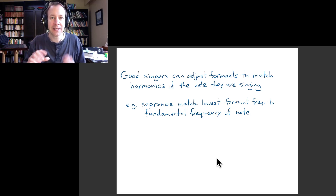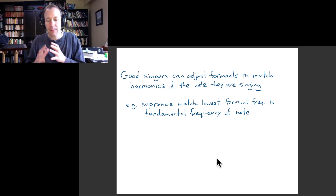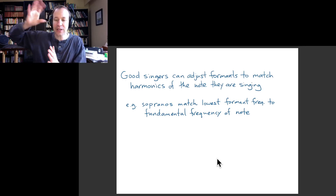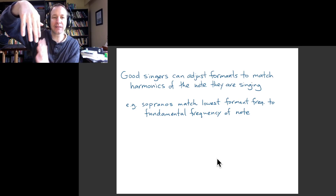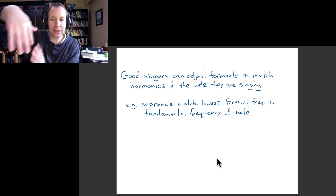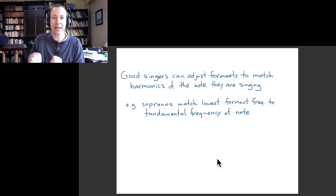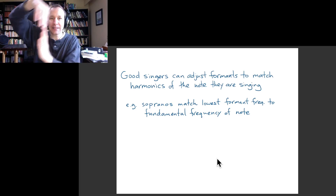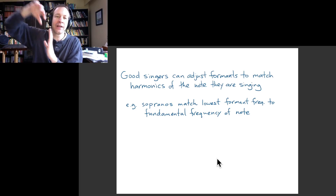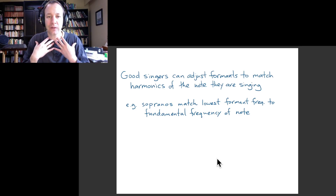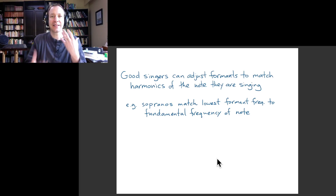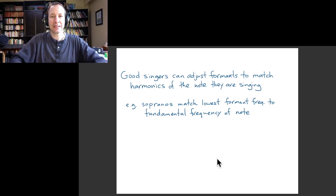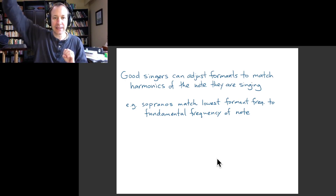This is particularly true for sopranos singing in their upper range, because there it's actually possible to adjust the vocal tract so that the first formant frequency lines up with the fundamental frequency of the note they're singing. In doing that, they get a very resonant tone. When singing different notes in that range, they're adjusting the oscillations of their vocal folds at the same time as they're adjusting the shape of their vocal tract, and this is how they can produce extremely resonant, loud singing in this high range.